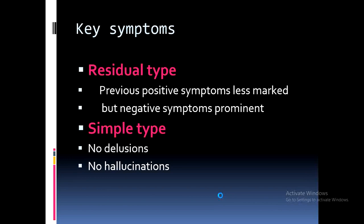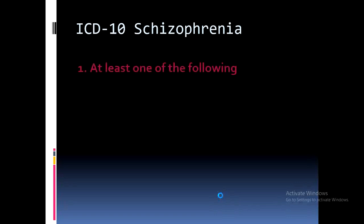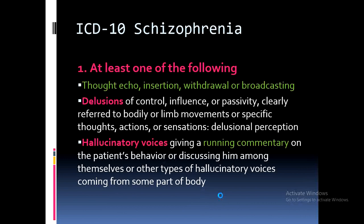Simple type of schizophrenia has no delusions and no hallucinations. According to ICD-10 classification, at least one of the following must be present: thought echo, thought insertion, thought withdrawal, and thought broadcasting. Thought echo means a thought is echoed in the person's brain. Thought insertion means someone is intruding and putting their own thoughts into the person's mind. Thought withdrawal means the person feels their thoughts have been removed from their mind.